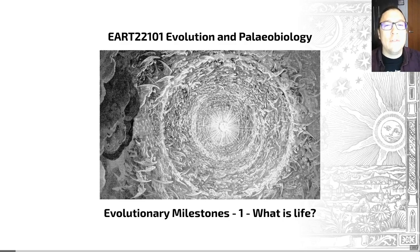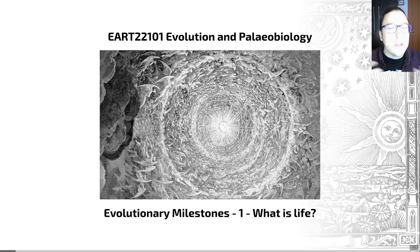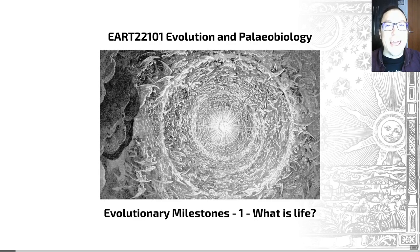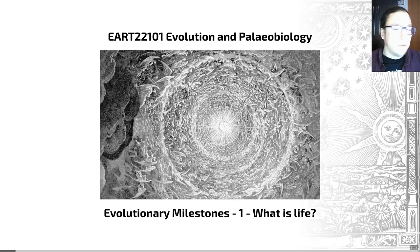Hello everybody and welcome to Evolutionary Milestones. Over the course of this series of videos, we're going to be looking at the origins of life and a series of major steps in the evolution of life, documenting roughly its first 3,000 million years of evolution or so. The first few videos are going to be focusing on an event called abiogenesis — the study of the origin of life — covering how, when, and possible processes by which abiogenesis may have occurred. So let's jump right in.